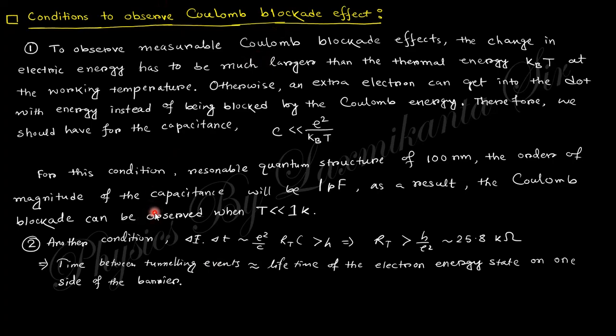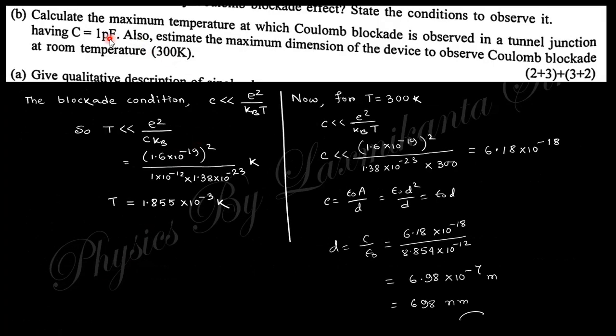Next question, based on Coulomb blockade, a numerical question is asked: calculate the maximum temperature at which Coulomb blockade is observed in a tunnel junction having C = 1 pF. Also estimate the maximum dimension of the device. That means to observe Coulomb blockade at room temperature, actually we use this condition. You will obtain this temperature T = 0.895 × 10⁻² K. So you can see how low this temperature is.